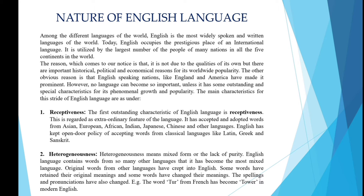No language can become so important unless it has some outstanding and special characteristics. The main characteristics of the English language are as follows. The first is receptiveness — the first outstanding characteristic of English. This is regarded as an extraordinary feature of the language. It has accepted and adopted words from Asian, European, African, Indian, Japanese, Chinese and other languages. English has kept an open-door policy of accepting words from classical languages like Latin, Greek and Sanskrit.